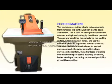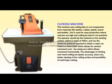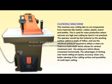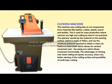This machine uses cutting dies to cut components from materials like leather, rubber, plastic, board, and textiles. It is used for mass production where volumes are high and cutting by hand is not practical. The operator would lay the material onto the working surface, which is made of Teflon, and use the minimum pressure required to obtain a clean cut.